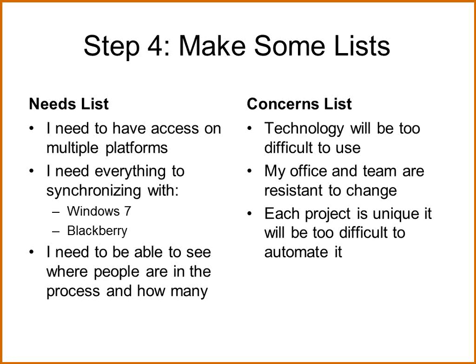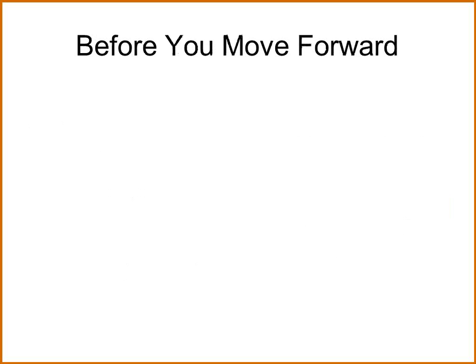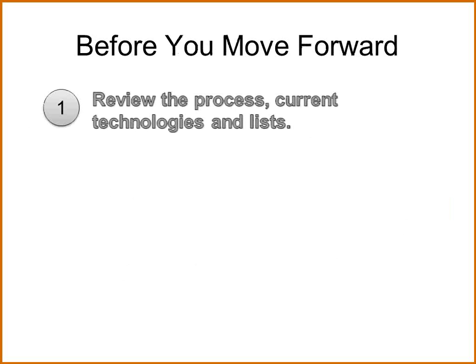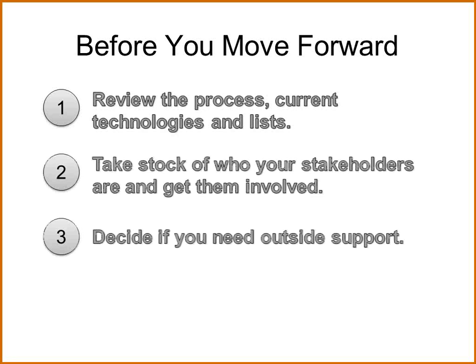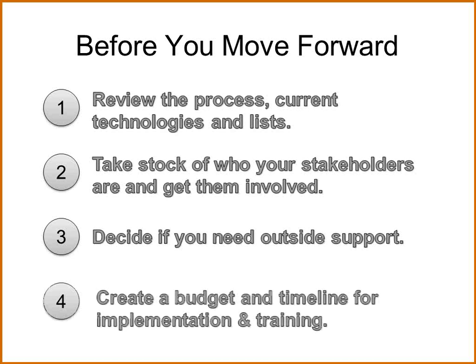Is each project too unique and too difficult to automate? I hear this a lot, and you'd be surprised how often that's not as true as they think. It should go on the concerns list because people in the organization might struggle with it. Before you move forward: one, review the process, current technologies and lists; two, take stock of who your stakeholders are and get them involved; three, decide if you need outside support — if there's nobody in-house with enough technical knowledge to make recommendations, you may need an outside consultant; four, create a budget timeline for implementation and training. So many people forget training.